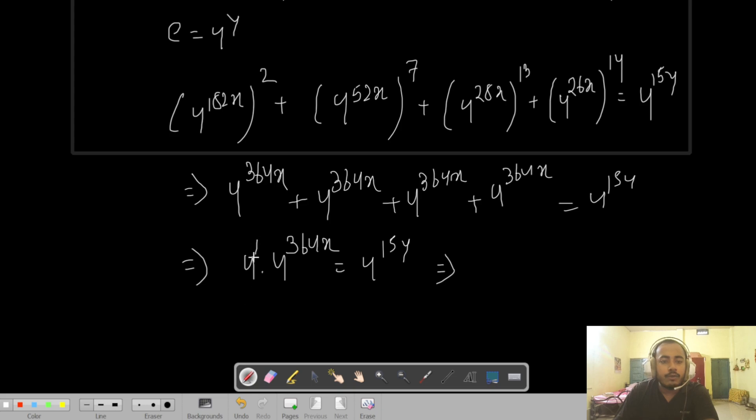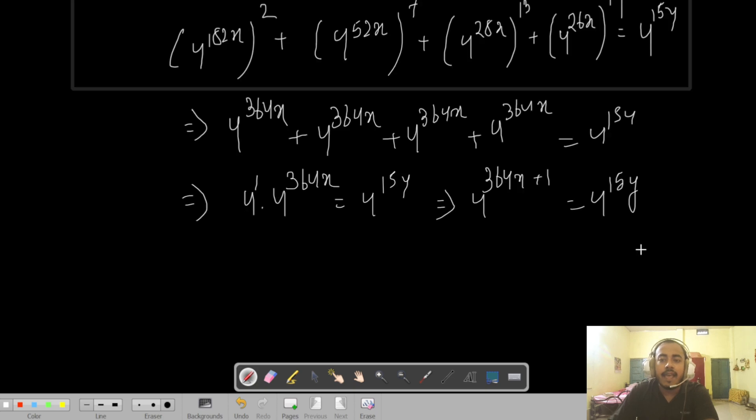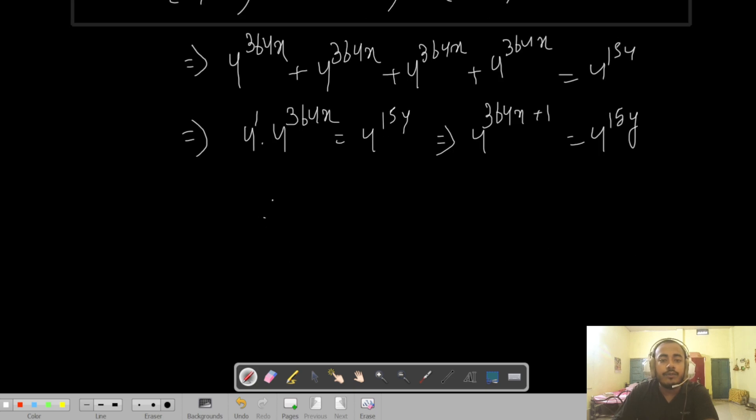Now apply the rule for exponents. This is 4 to the power 364x plus 1 equals to 4 to the power 15y. And therefore, this is only true when 364x plus 1 is basically equal to 15y.